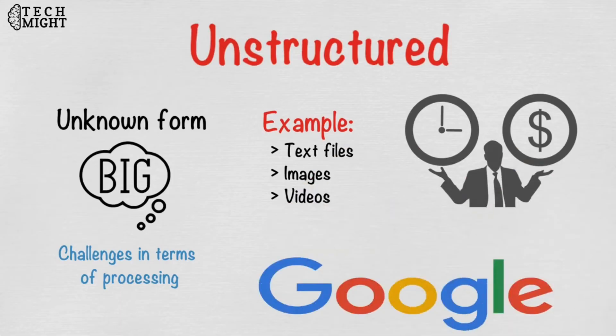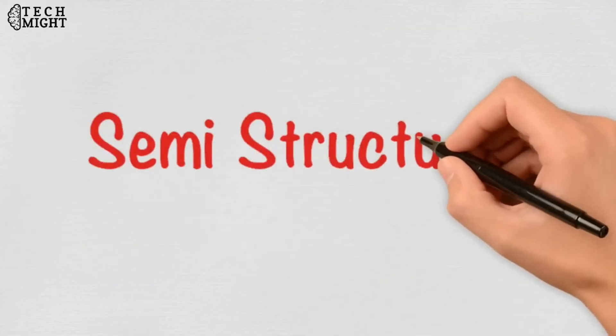An output returned by Google search is a simple example of unstructured big data. The third and the last one is semi-structured big data.